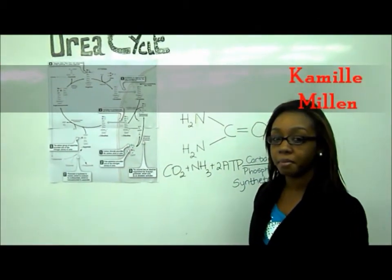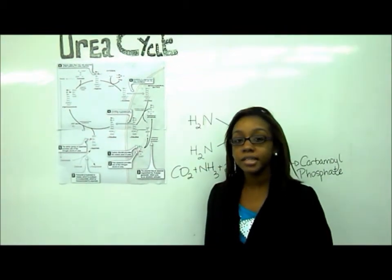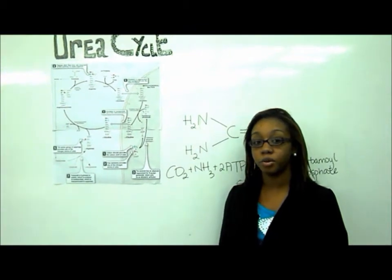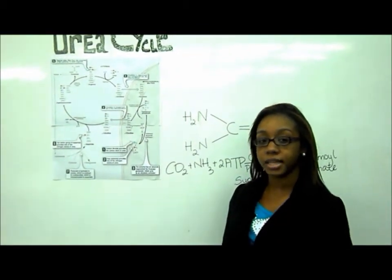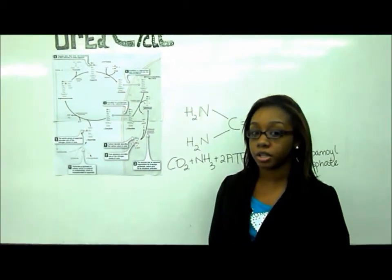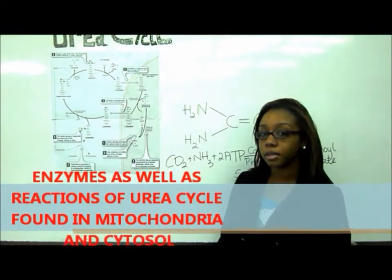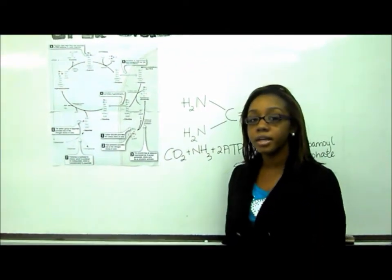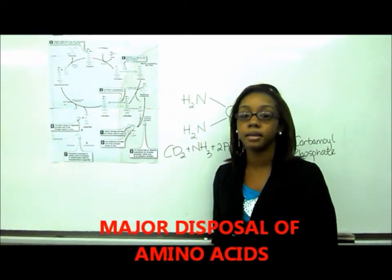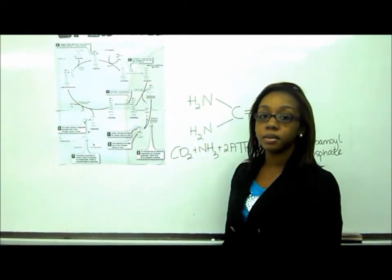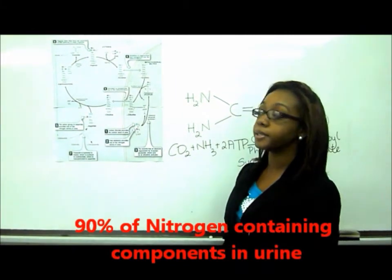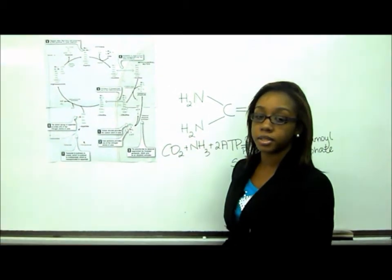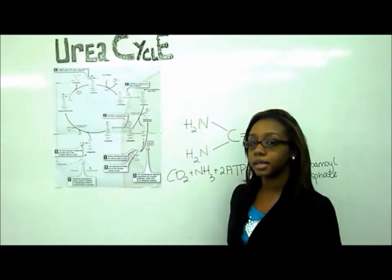I'm Julia and I will start with the medical mission of the urea cycle. The urea cycle is the major component of nitrogen metabolism. The enzymes involved in the urea cycle are formed in the mitochondrial matrix as well as the cytosol. Urea is the major disposal form of amino acids and accounts for 90% of the nitrogen-containing components in our urine. Urea is produced in the liver, transported in the blood to the kidneys, where it is excreted in urine.